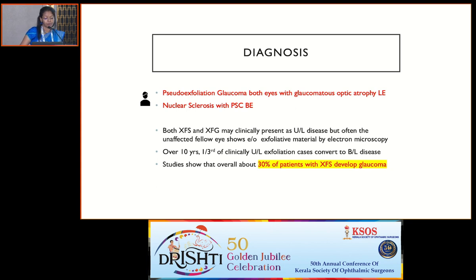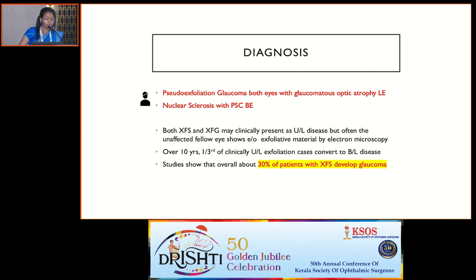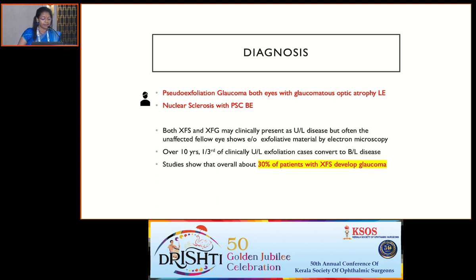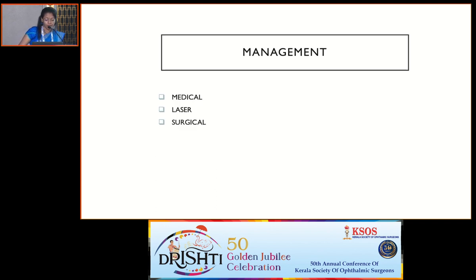The diagnosis was revised to pseudo-exfoliation glaucoma in both eyes, with optic atrophy in the left eye and nuclear sclerosis in both eyes. Though pseudo-exfoliation syndrome and glaucoma may present clinically as unilateral disease, about one third of cases can convert to bilateral disease over a period of 10 years. Studies show that about 30 to 40% of patients with pseudo-exfoliation syndrome develop glaucoma.